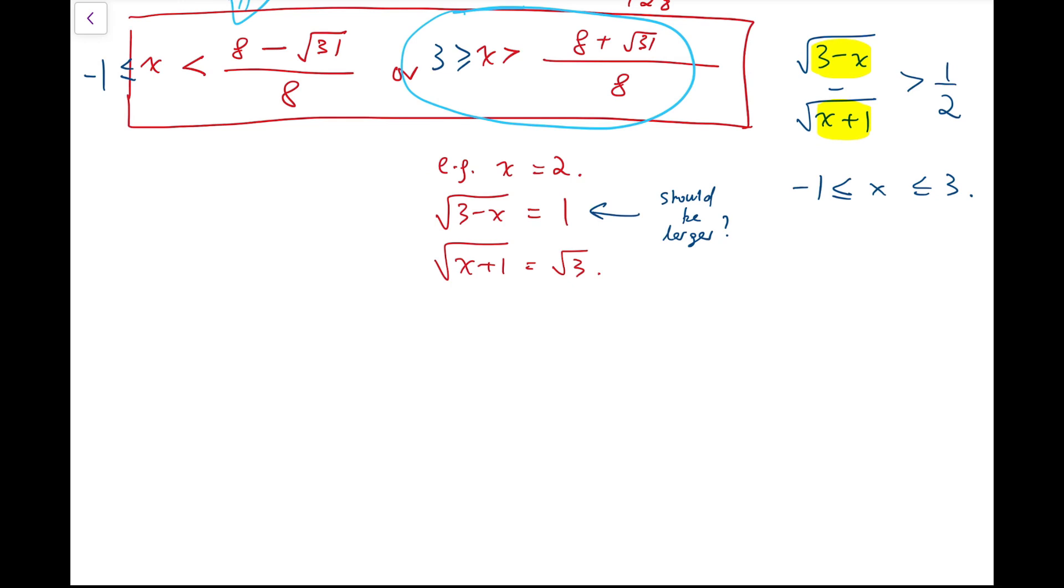Another natural constraint for this inequality to hold is that I should have 3 minus x to be greater than x plus 1. Which means x has to be actually smaller than 1. So apparently, the inequality circled in light blue cannot hold. This has to be completely rejected.